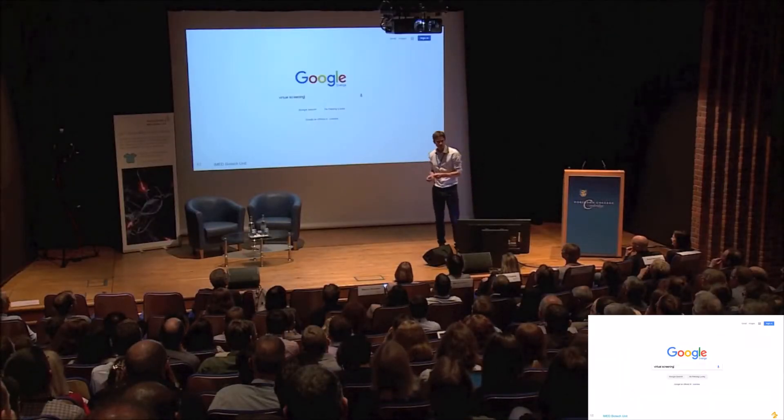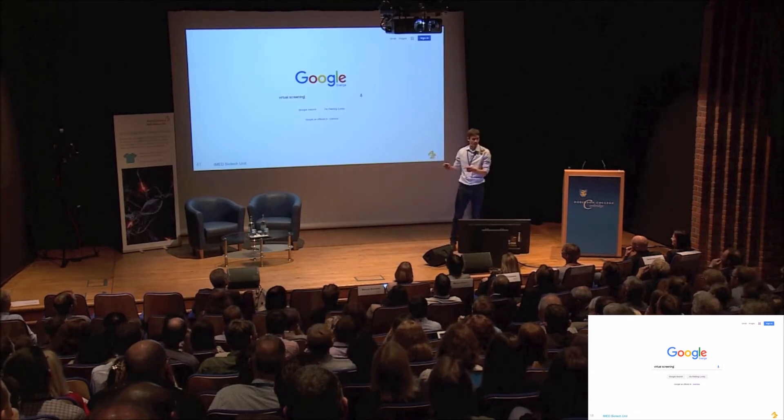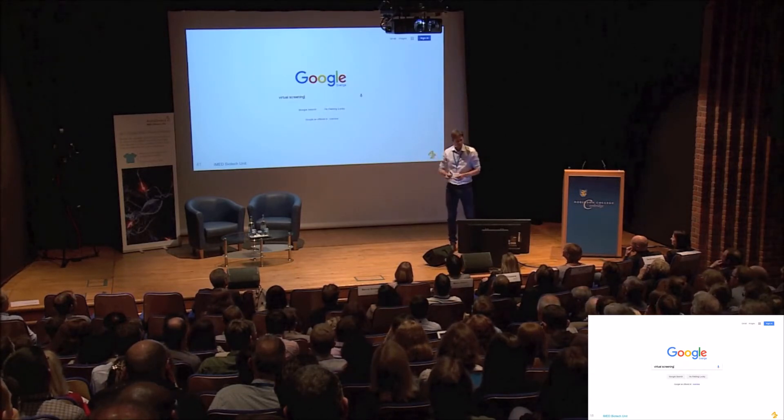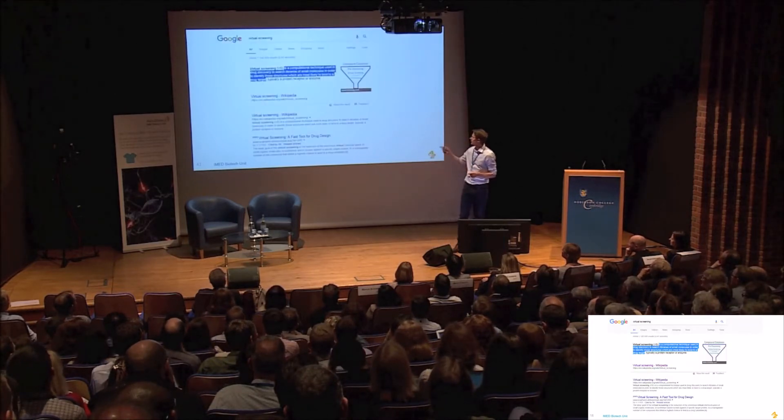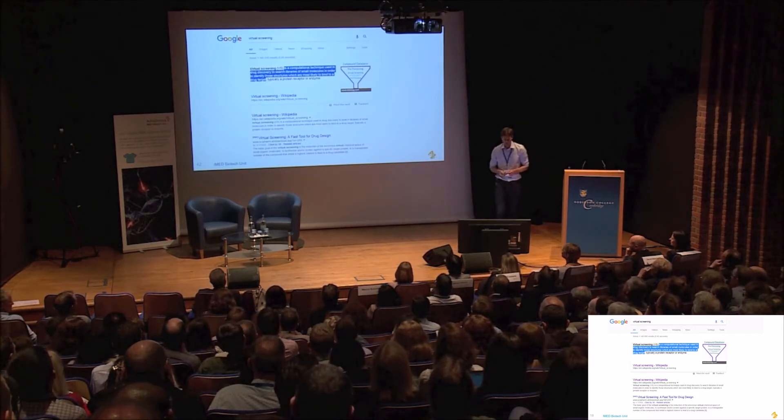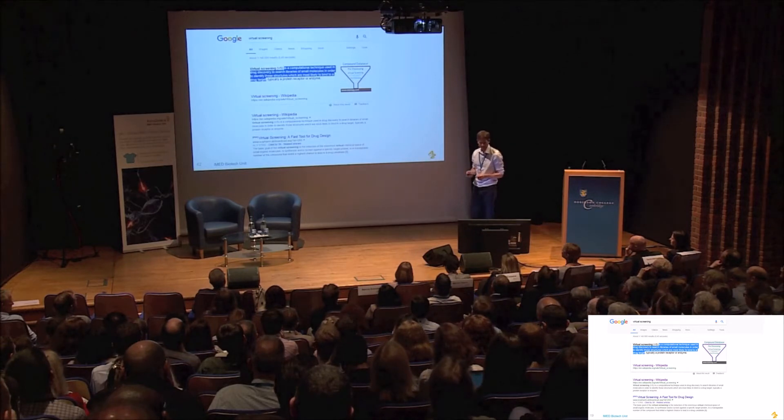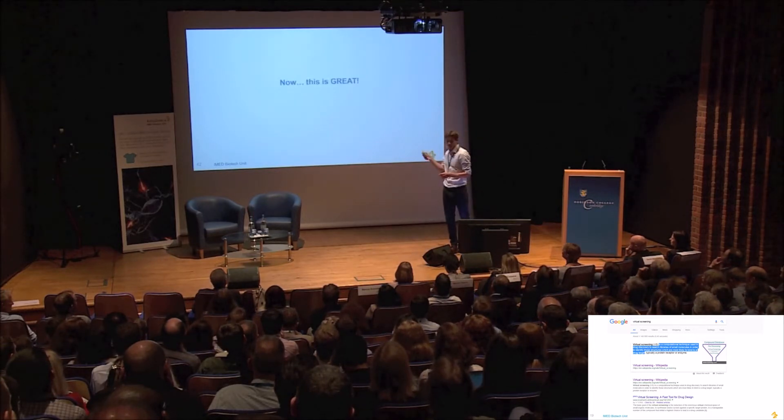So nowadays, we have something called Google. So if I wanted to know something, then I just type in, for example, virtual screening. What happens then? You get something like this. So virtual screening is a computational technique used in drug discovery to search libraries of small molecules to find structures which are likely to bind to a drug target. So this is pretty cool. This is great. I get the information I want.